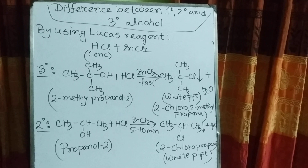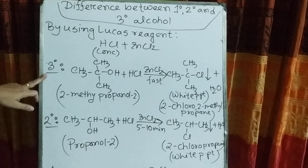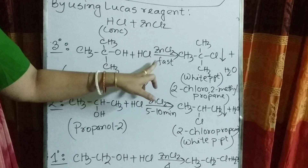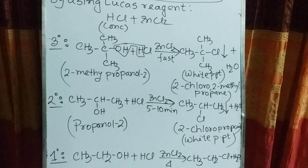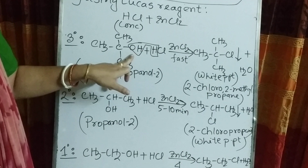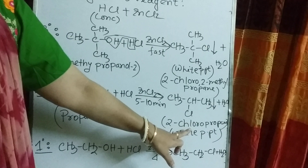First of all, by using Lucas reagent. The mixture of concentrated HCl and anhydrous zinc chloride is known as Lucas reagent. When you use Lucas reagent, for tertiary (3°) alcohol, it immediately gives a white precipitate — the H and OH is replaced by chloride, which replaces the OH group. For secondary alcohol, when Lucas reagent is added, in between 5 to 10 minutes, it forms a white precipitate, here the precipitate of 2-chloropropane.